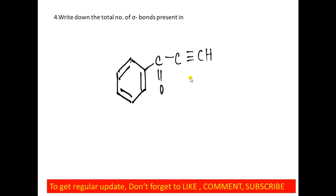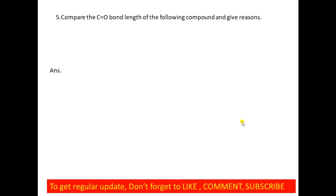The next question: find the total number of sigma bonds in this molecule. Remember: a single bond has only one sigma bond; a double bond has one sigma bond and one pi bond; a triple bond has one sigma bond and two pi bonds. Here, the C≡C triple bond contributes one sigma bond and two pi bonds; the C–C single bond contributes one sigma bond; the C=O double bond contributes one sigma bond and one pi bond; and the ring structure contributes six sigma bonds and three pi bonds. Therefore, the molecule has 12 sigma bonds and 6 pi bonds.